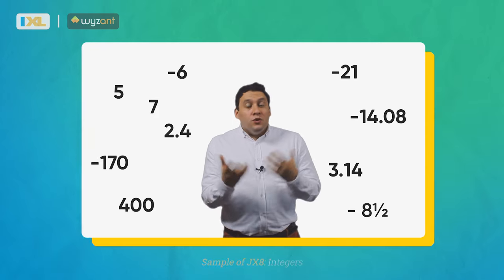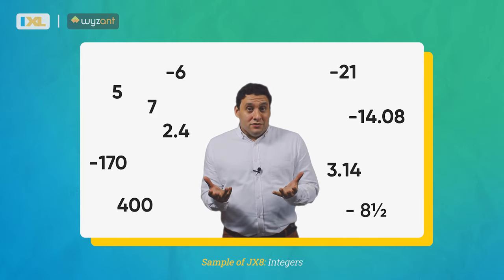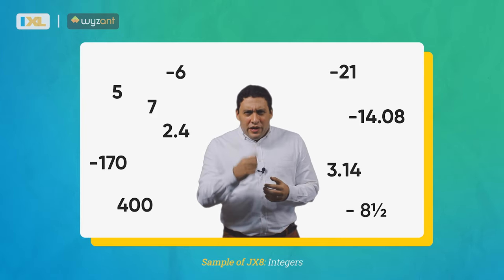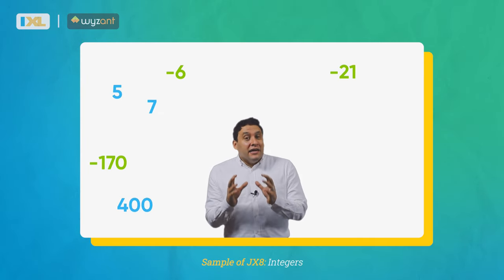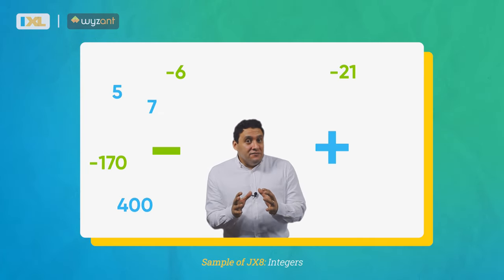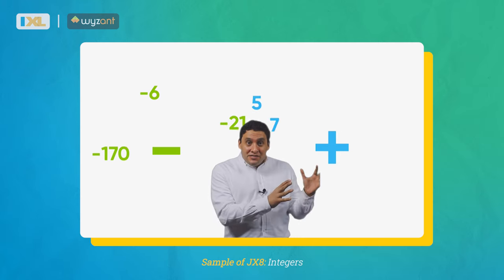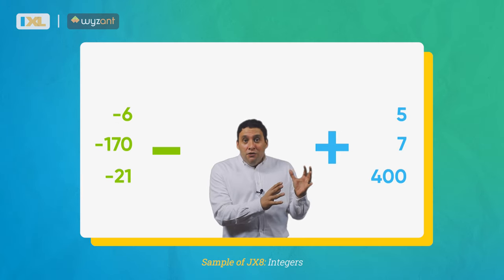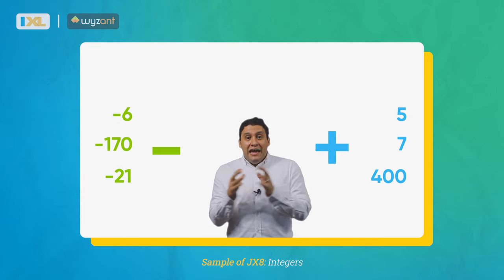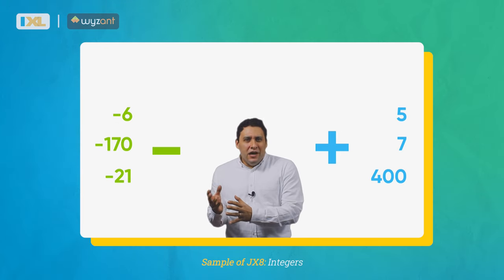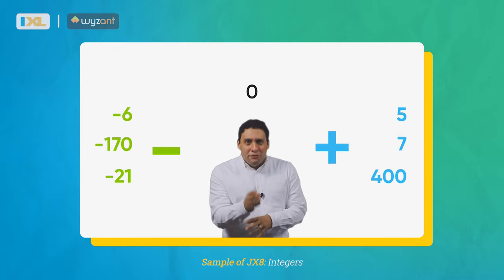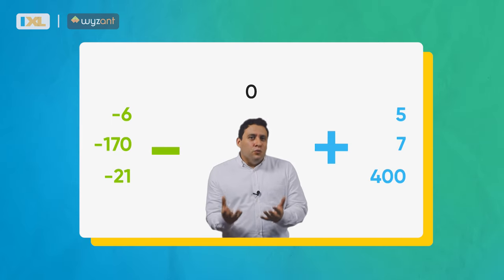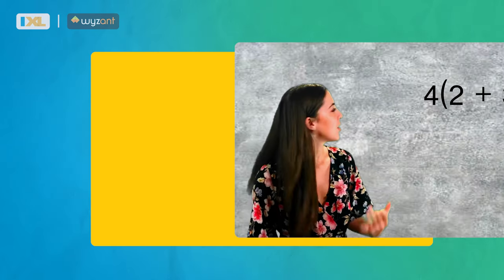But first, what's an integer? That's a great question. Integers can be positive if greater than 0, or they can be negative if less than 0. And of course, there is also 0 itself, which is an integer.